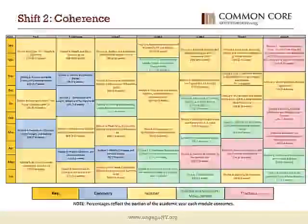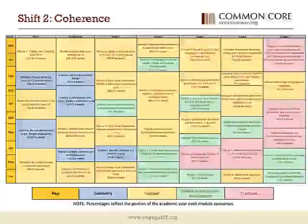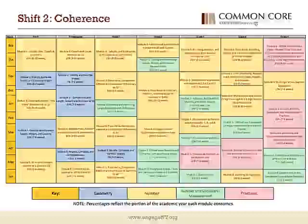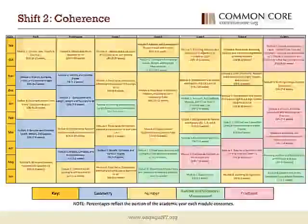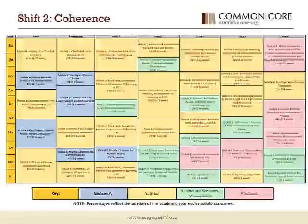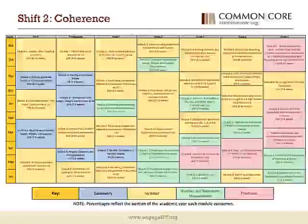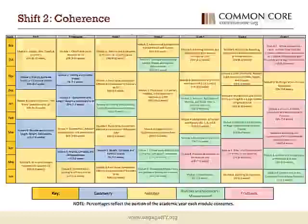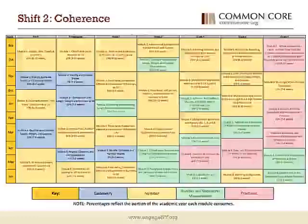A Story of Units sequences the Common Core Learning Standards to connect topics within a grade and across grades — such coherence allows students to build on what they already learned in order to understand new, more challenging concepts. Pictured here is the year-long curriculum map for A Story of Units. The colors emphasize how work in the content areas of number, in yellow, and geometry, in blue, are meticulously sequenced within and across early grades to prepare students for later, more challenging work involving geometry and measurement with calculations in green, and fractions in pink.